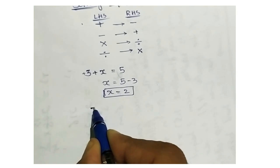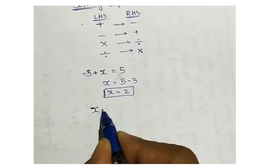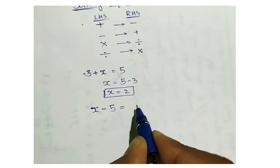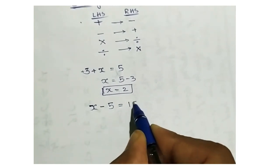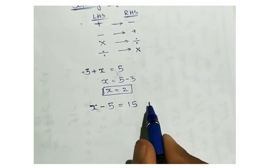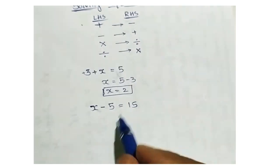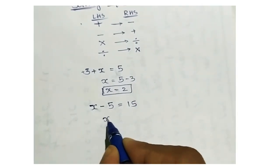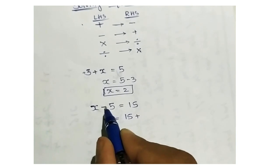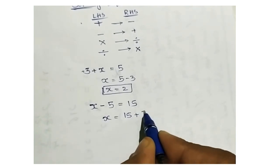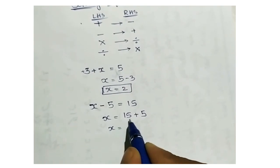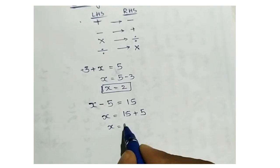Another example: let's take x minus 5 gives us 15. Here minus 5 is there. If I take it to the right side, minus becomes plus. So x equal to 15 plus 5, it will be 20.